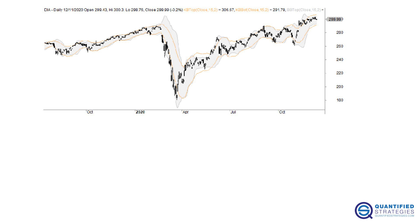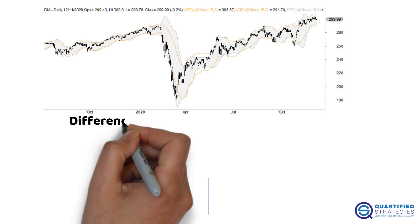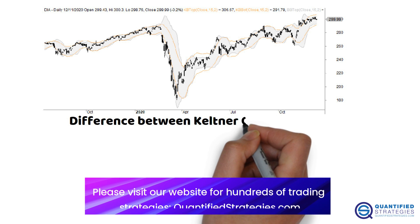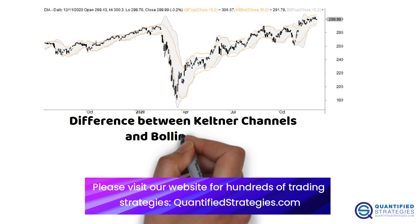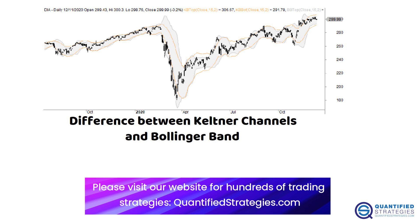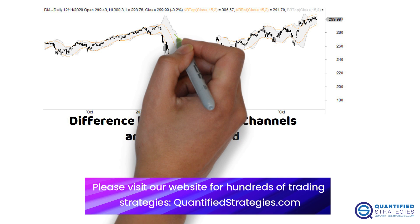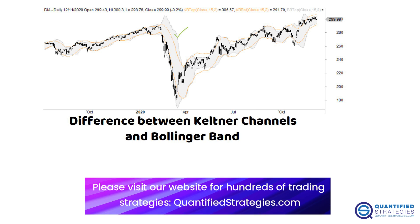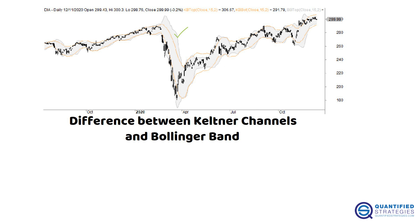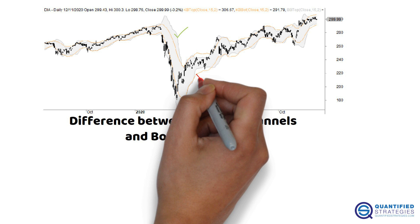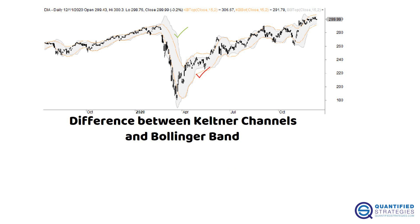On the screen, you can see the difference between Keltner channels and Bollinger bands. The gray shaded area is the 15-day Bollinger bands using two standard deviations, while the orange lines are the 15-day Keltner bands added and deducted to ATRs.